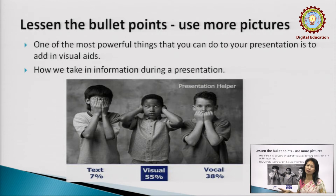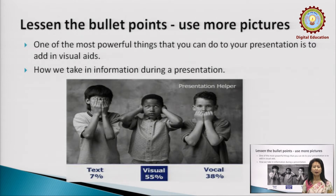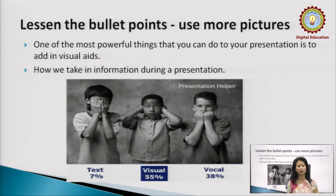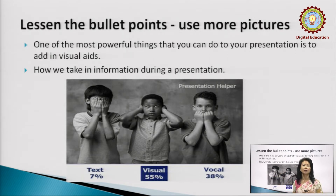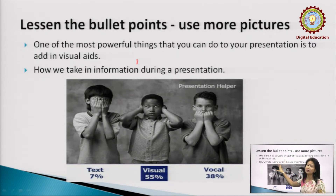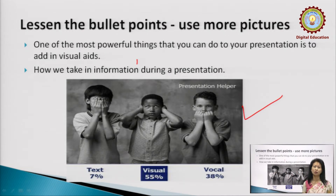Very important: lessen the use of bullet points. The more bullet points you use, the more it becomes too much content. In a PPT there are three main things: design, content, and delivery. We have talked about design. We are also talking about how the content is going to be put — the transition, the animation, etc. Try to use as much visual content as possible — things like pictures, graphs, videos, etc. That is going to catch the eye.